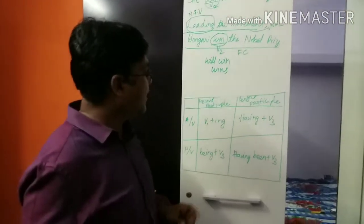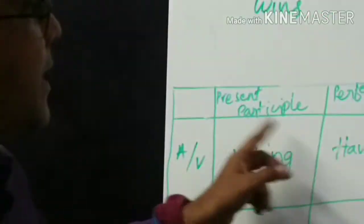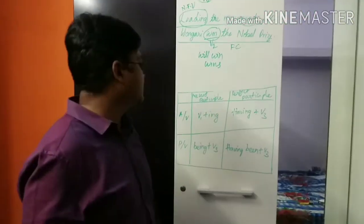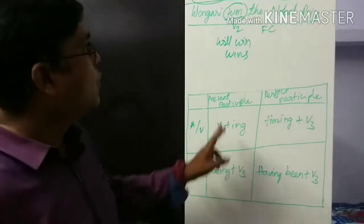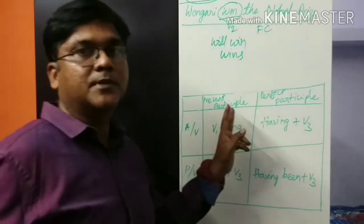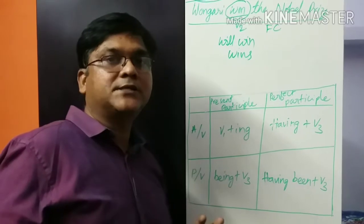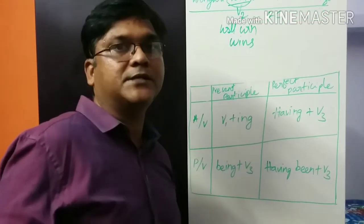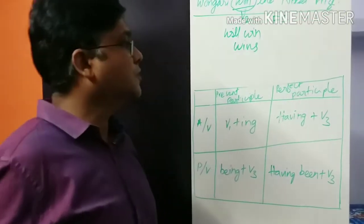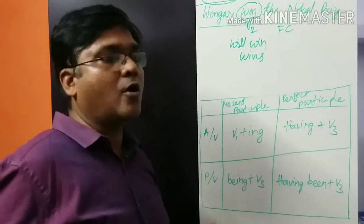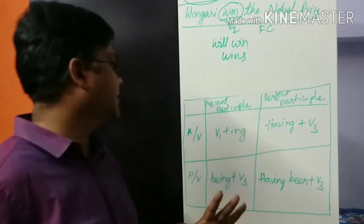Here we have a table which shows present participle and perfect participle in active voice and passive voice. What is a participle? A participle is a word that partially denotes a verb and partially denotes an adjective. So a participle can be called a verbal adjective.